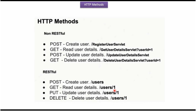If you notice, for read user details, update user details, and delete user details the path is the same. But how we can identify whether it is read, update, or delete? We identify it based on the HTTP method we are going to use.